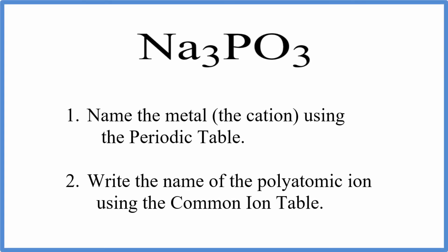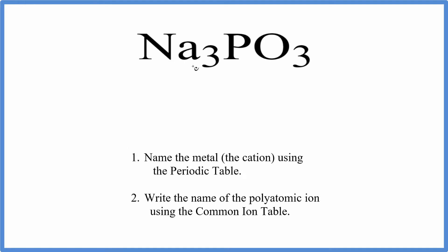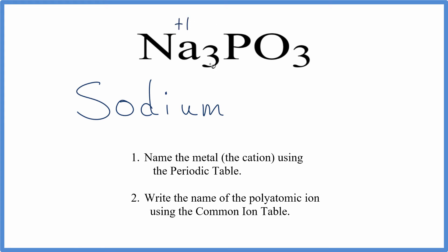To write the name for Na₃PO₃, that's sodium phosphite. We have a metal and then some non-metals — in fact, a polyatomic ion. For the metal, we go to the periodic table, we look up Na, and that's sodium. We know that sodium has a plus 1 charge, and we have 3 of them, so 3 times plus 1, that's a plus 3 on this part of the equation.